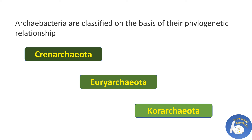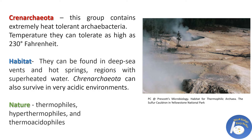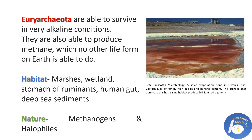Archaebacteria are classified on the basis of phylogenetic relationships into three types: Crenarchaeota, Euryarchaeota, and Korarchaeota. Crenarchaeota contains extremely heat-tolerant archaebacteria that can tolerate temperatures as high as 230°F. Their habitats include deep-sea vents, hot springs, and fissures with superheated water. They can also survive in very acidic environments. Their nature includes thermophiles, hyperthermophiles (extremely high temperature tolerance), and thermoacidophiles (high temperature and very acidic conditions).